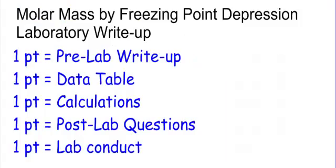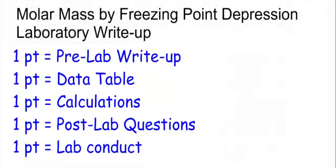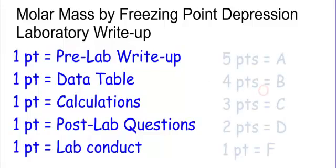Here's how you'll be graded on this molar mass by freezing point depression lab. One point for a correct pre-lab write-up covering the four measurements, the one value from me, and the four calculations. One point for your data table, one point for your calculations, one point for your post-lab questions, and one point for lab conduct — meaning you are safe and you know the procedure and get right to work. Five points is an A, four a B, three a C, two a D, and one an F. This goes on the homework grade as a large assignment.